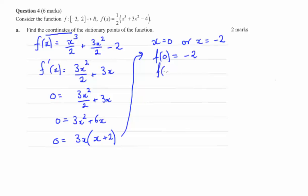Let's find f of negative 2. So we're going to have negative 2 cubed over 2 plus 3 times negative 2 squared over 2 minus 2. That gives us negative 8 over 2, which is negative 4. And then we get 12 over 2, which is 6.